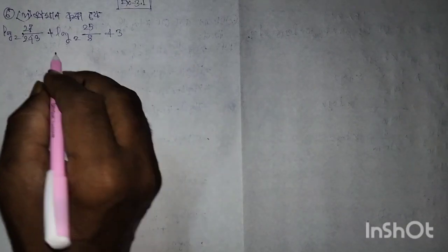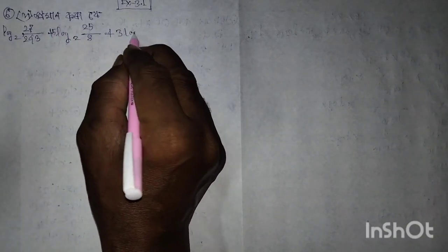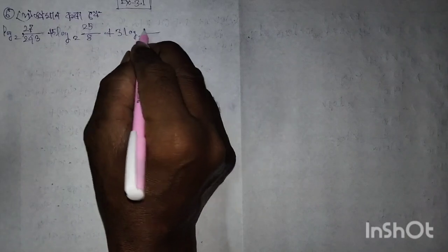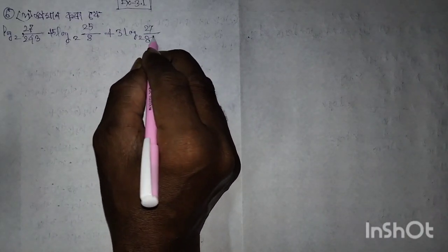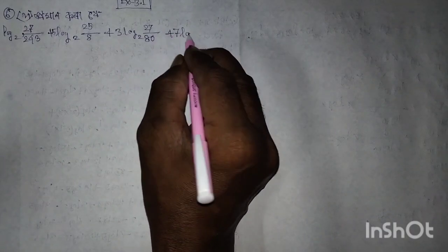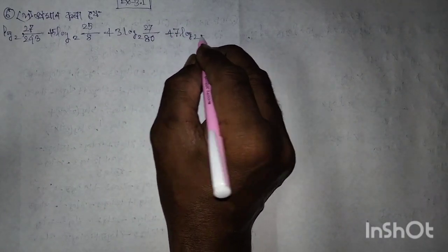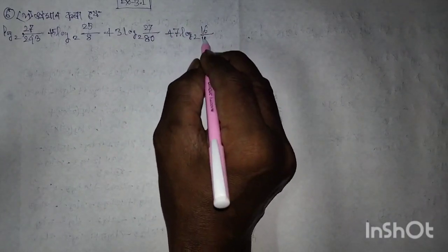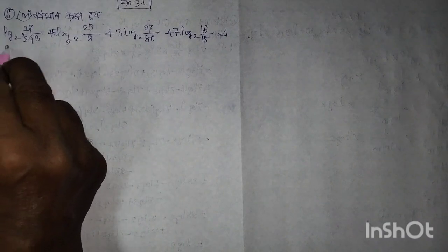5 log 2, 3 log 2 of 27 by 80, plus 7 log 2 of 17 by 15, is equal to 1. Proof.